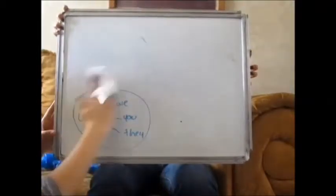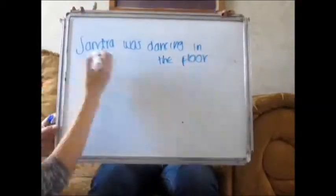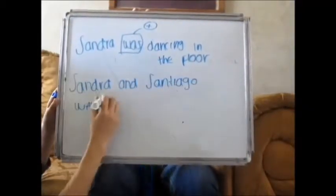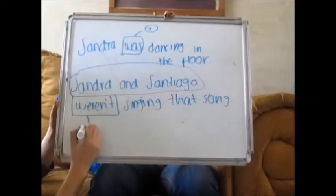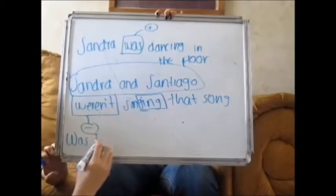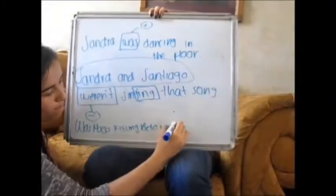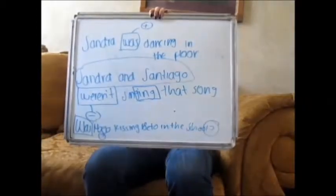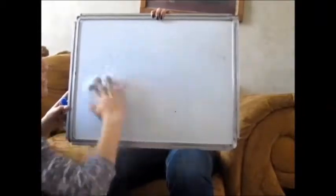For example: Sandra was dancing on the floor — was is positive. Sandra and Santiago weren't singing that song — were is negative and singing is the verb with -ing. Another example in interrogative is: was Mago kissing Beto in the school?